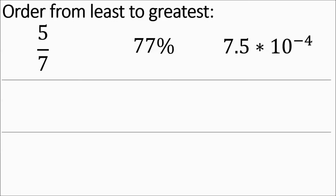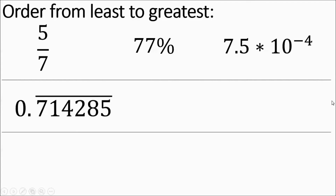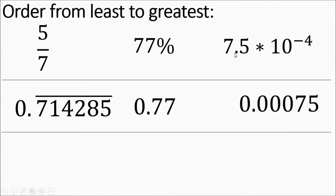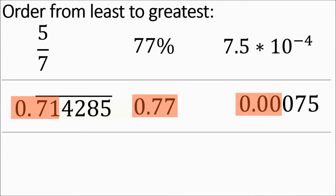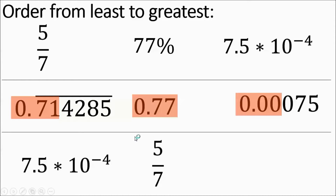We have five-sevenths, 77 percent, and 7.5 times 10 to the negative four. Using the sevenths trick, five-sevenths is about 0.714. 77 percent is 0.77. For 7.5×10⁻⁴, slide four places to the left, giving 0.00075. Looking out to the hundredths place, 0.00075 is smallest, five-sevenths (0.71) is in the middle, and 77 percent is largest. So: 7.5×10⁻⁴ < 5/7 < 77%.